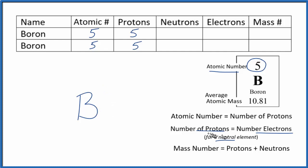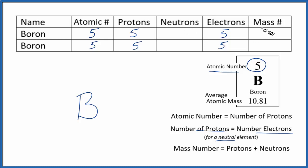Since the number of protons equals the number of electrons for a neutral element, we put five for electrons as well — and that's true for any isotope of boron. Now we need to figure out the number of neutrons and the mass number. Normally you're given one of these in a table, and you use the formula to figure the other one out.